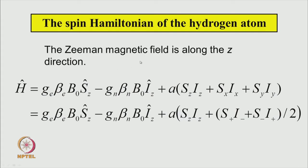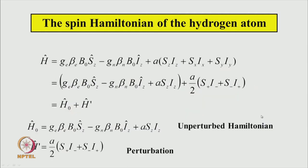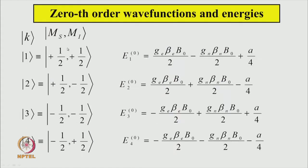So let us recapitulate our Hamiltonian for the hydrogen atom. This is the Hamiltonian: this is the electron Zeeman term, this is the nuclear Zeeman term, and this is the isotropic hyperfine interaction. This can be written in this fashion. Here we treat the electron Zeeman, nuclear Zeeman, and A·Sz·Iz as the unperturbed Hamiltonian, and the other part is treated as a perturbation. The zeroth order wave functions are given as product states of the electron spin angular momentum component and nuclear spin angular momentum component.